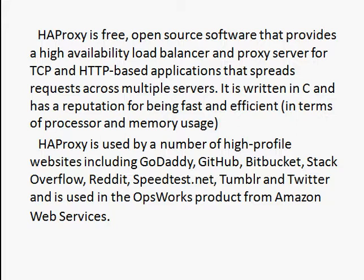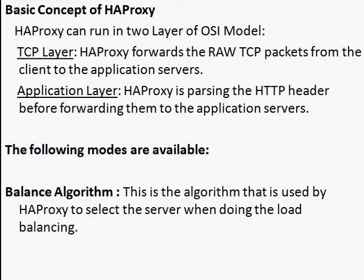HAProxy is used by a number of high profile websites such as GitHub. HAProxy runs on two layers of the OSI model: the fourth layer, which is the TCP layer, and the seventh layer, which is the application layer.